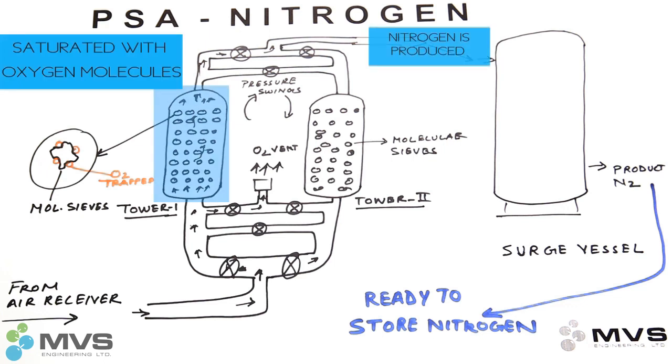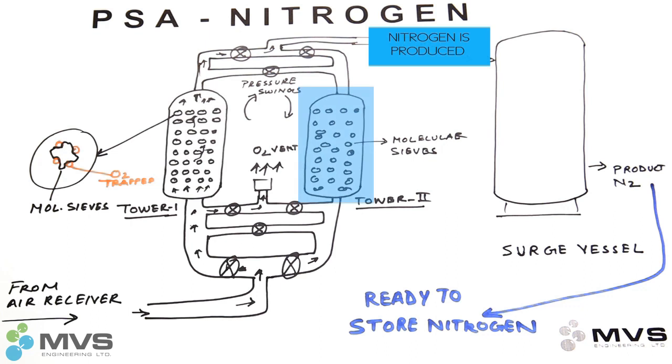Then we switch over to tower 2, which then gets pressurized by compressed air and starts the production of nitrogen. In the meantime, tower 1 is depressurized and the oxygen molecules are released back into the atmosphere through a vent port.